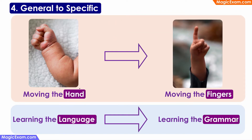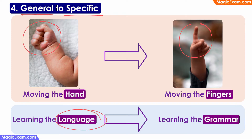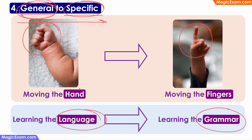The next important principle is general to specific. In physical development, the child will first learn to move the entire hand, which is a general movement, and only then learn to move each finger specifically or independently. Similarly in language development, the child will first learn the language in a general sense and then move towards specifics such as grammar. All types of development start with the general aspects first and only then move towards the specific aspects — this is the principle of general to specific.